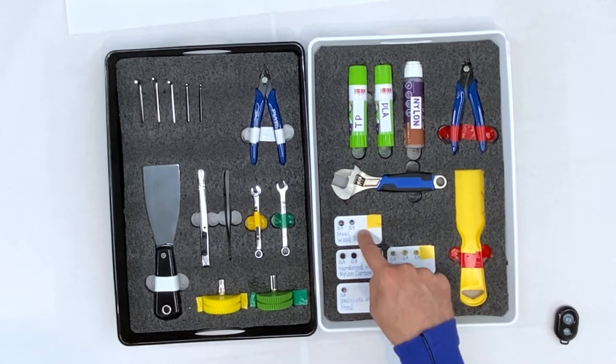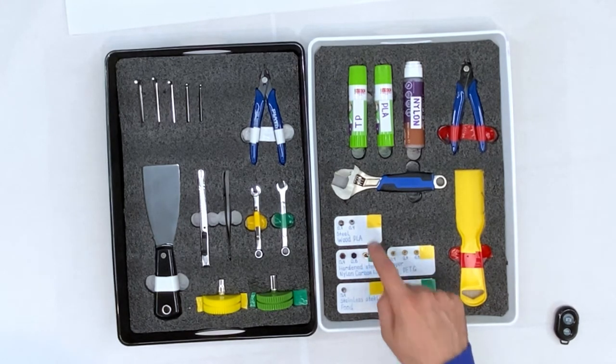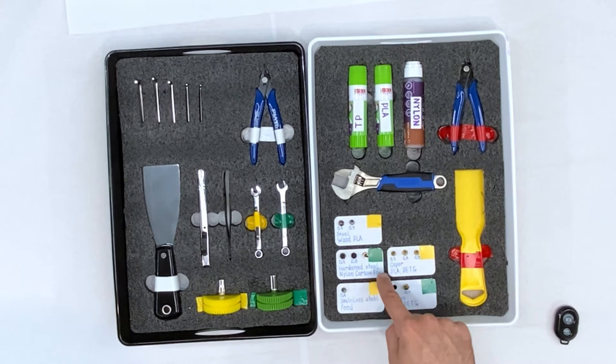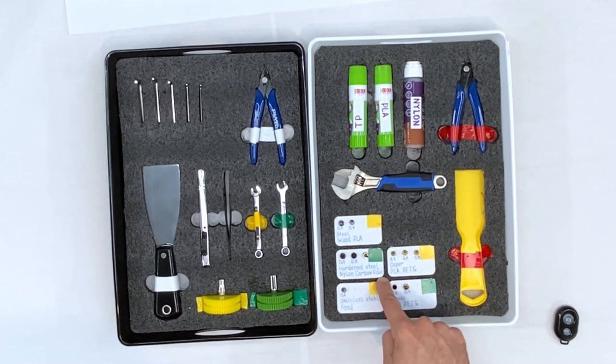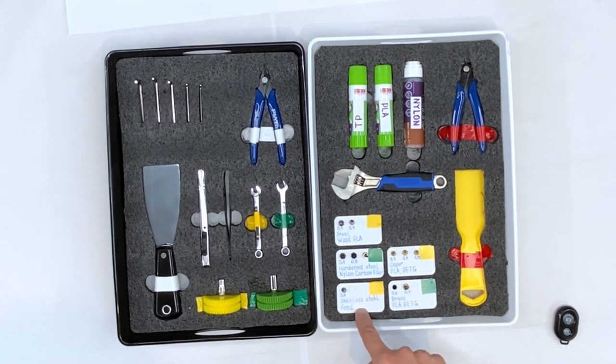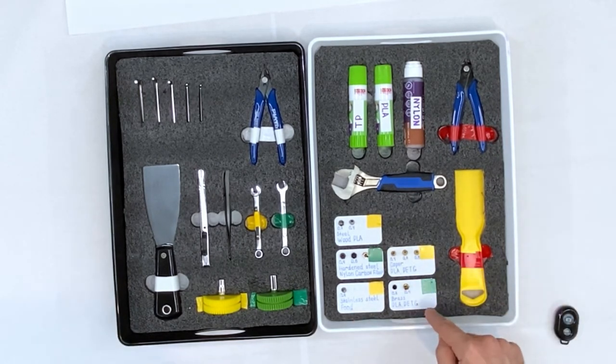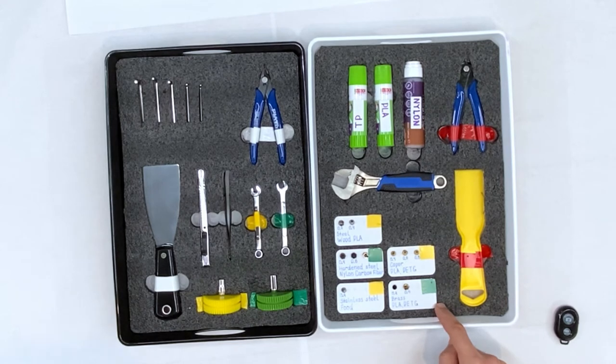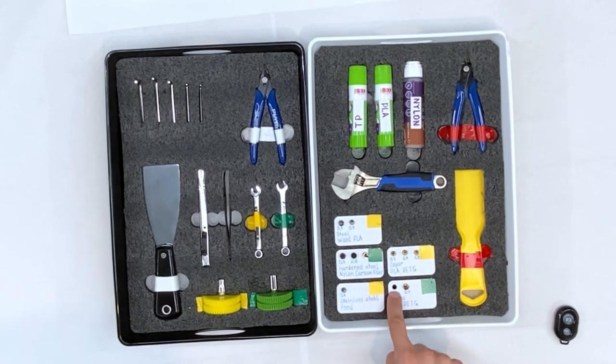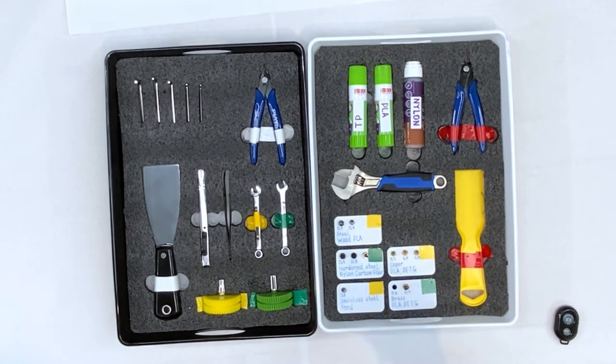As you can see, I use labels to write the nozzle material and what type of filament I have to use this nozzle for. The steel nozzle is to print wood PLA. The hardened steel nozzle is to print nylon carbon fiber. The stainless steel to print food safe products. And the copper and brass for the regular PLA and PETG material.